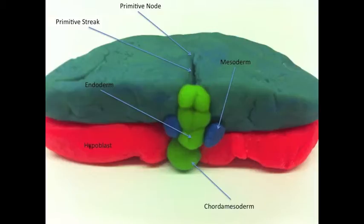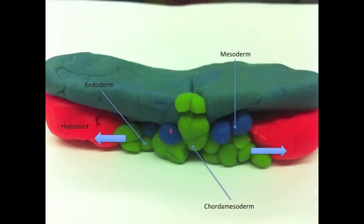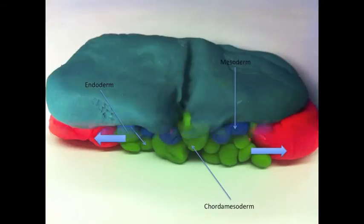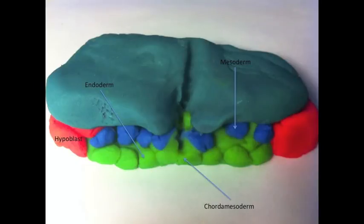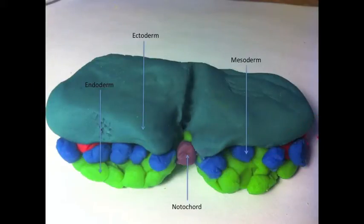The first mobile epiblast cells to enter the node will first become cordomesoderm that will later form the notochord. The first cells to enter the streak will displace the hypoblast to become endoderm and the cells that enter the primitive streak later in the same fashion will become mesoderm. The cells that don't enter the primitive streak and remain on the surface will become ectoderm.